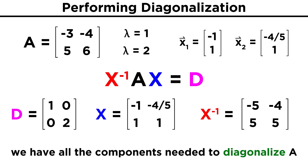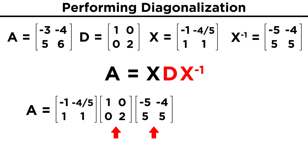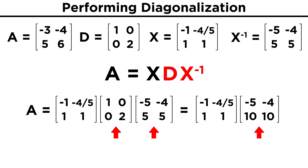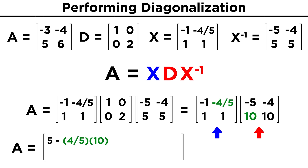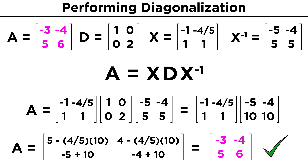We have found all the components to diagonalize A: X, D, and the inverse of X. But in order to show that setting up the matrices in this way does in fact give back A, following the equation A equals X D X inverse, let's do the multiplication to verify. First take D times X inverse, and we get negative five, negative four, ten, ten. Next we will multiply X by this new matrix, giving us five minus four fifths times ten, four minus four fifths times ten, negative five plus ten, negative four plus ten. This becomes five minus eight, four minus eight, five, six. We end up with negative three, negative four, five, six, which was indeed the matrix A we started with.